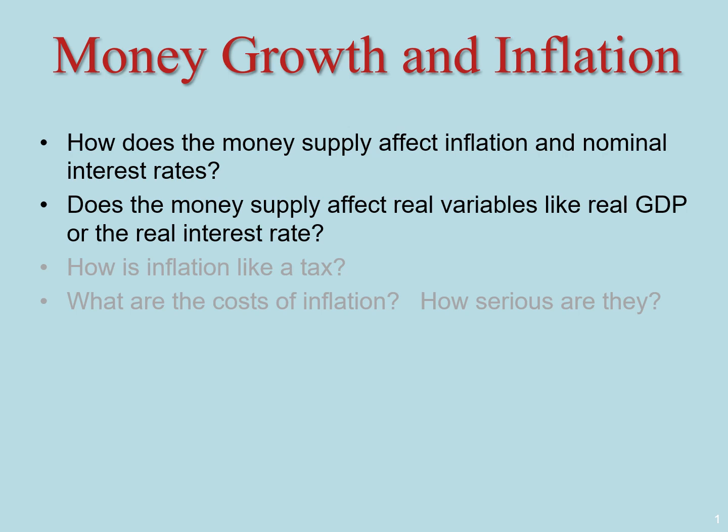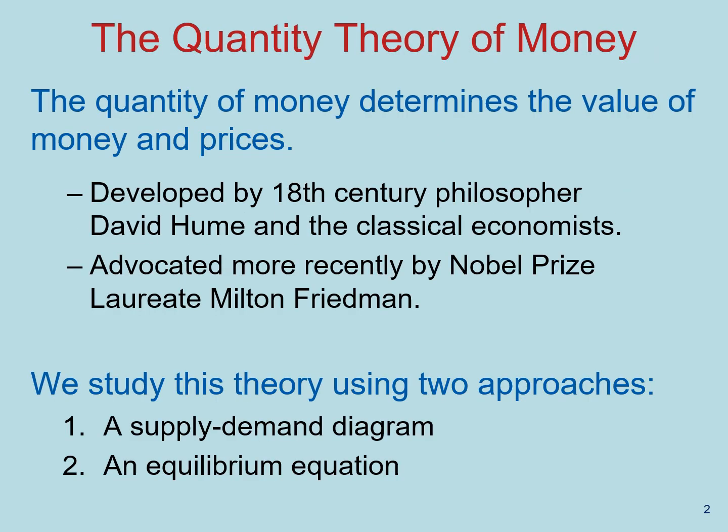In this video, we're going to talk about the quantity theory of money, which illustrates a connection between money supply and nominal variables like price, inflation, and nominal interest rates. The quantity theory of money simply states that the quantity of money determines the value of money and prices around the economy. It was developed by 18th century philosopher David Hume and the classical economists, and more recently has been advocated by Nobel Prize laureate Milton Friedman.